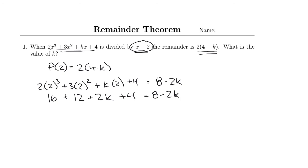I'm going to simplify things here. 16 plus 12 is 28, plus 4 is 32 plus 2k equals 8 - 2k.